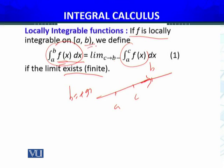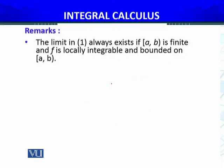To include the case when b equals plus infinity, we adopt the convention that the limit as c approaches plus infinity is taken from the left side — meaning c goes to infinity. This defines the improper integral in the case where the upper limit is infinite.